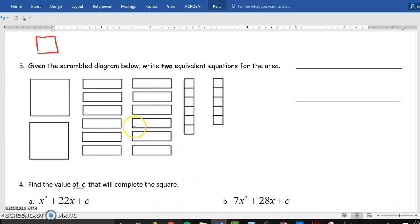Now, the next one says, given the scrambled diagram, write two equivalent equations for the area. Well, the first one is just counting up everything you have here. So, these each are x squared. How many of them do I have? 2x squared. Then I have, remember these are 1 by x's...